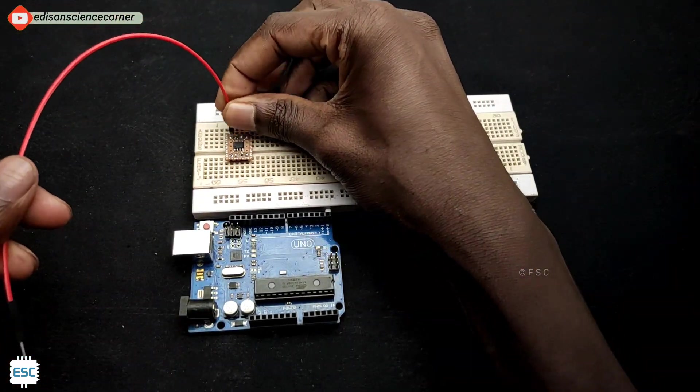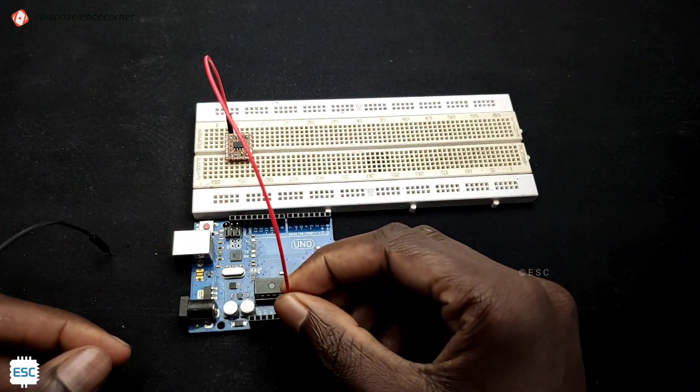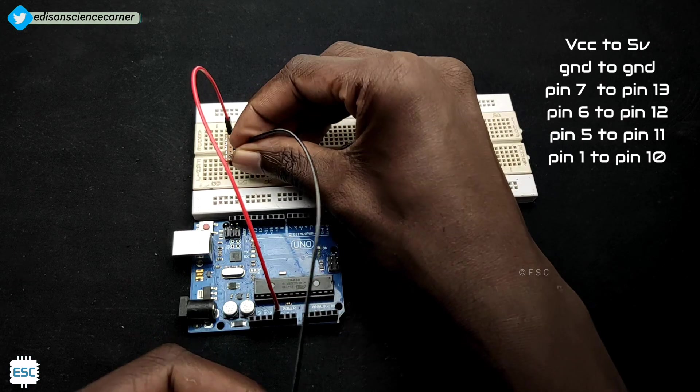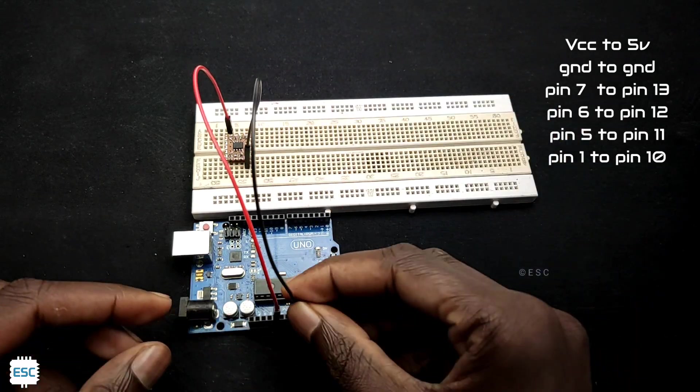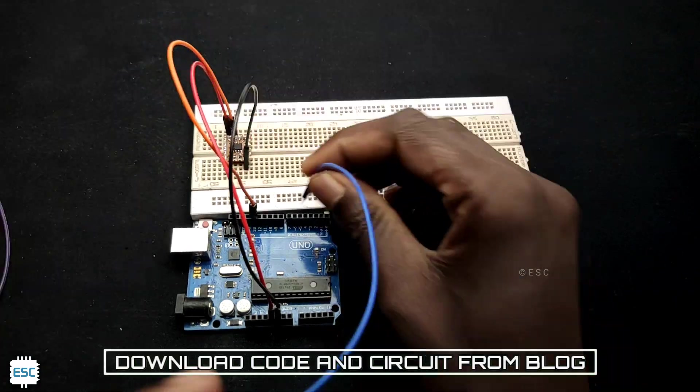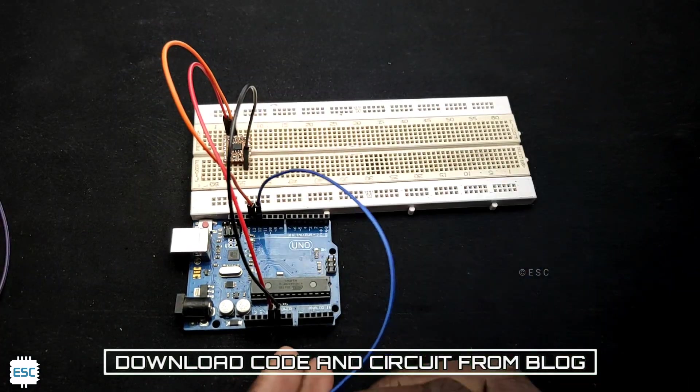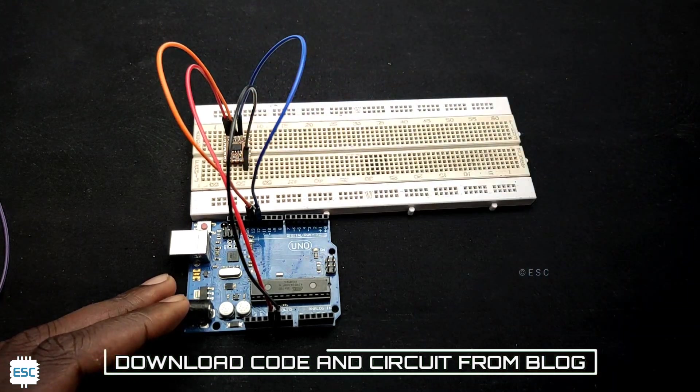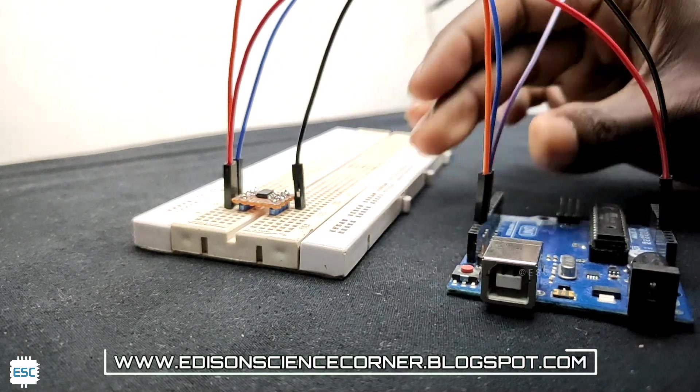Now let's connect VCC of ATtiny13 to 5 volt pin of Arduino, ground to ground, pin 13 of Arduino to pin 7, pin 12 to pin 6, and pin 11 to pin 5.